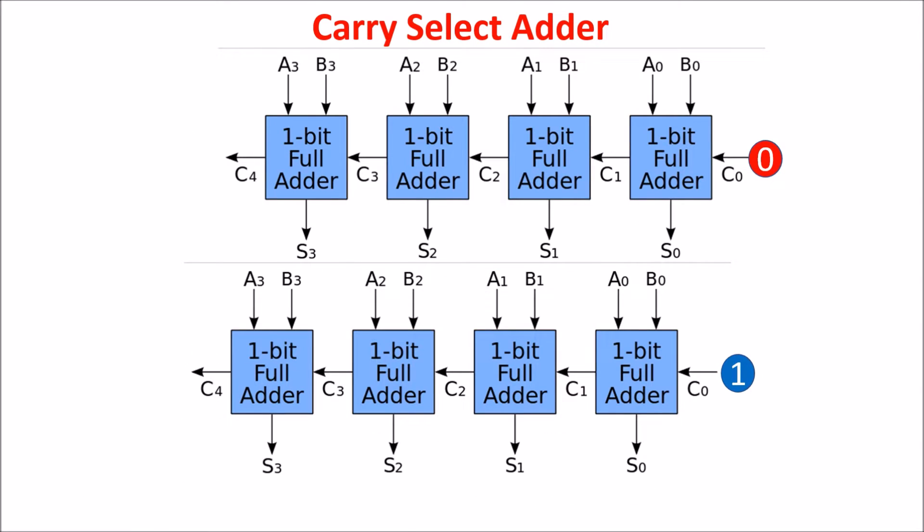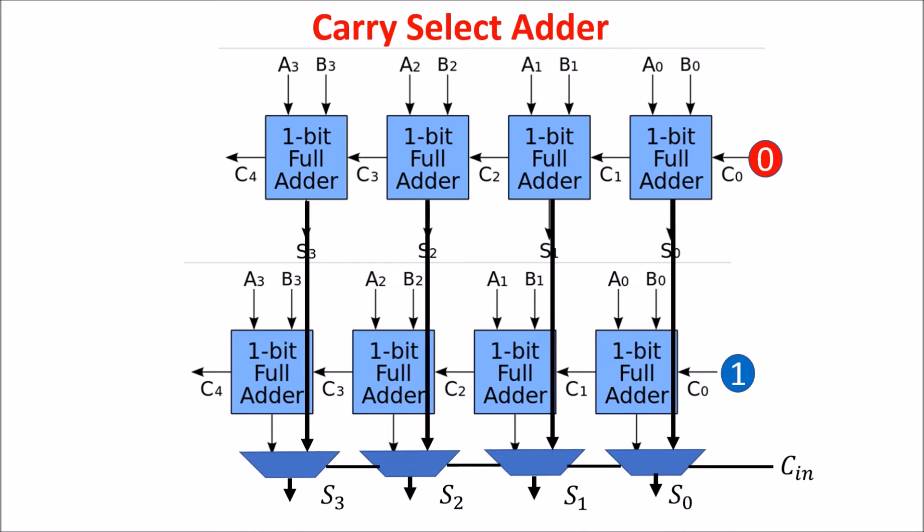Now by means of multiplexers, we select the right result from the right ripple carry adder. If Cin equals 1, we select the ripple carry adder with 1 as carry input; otherwise, we select the zero line.